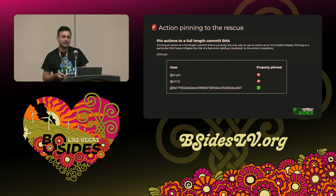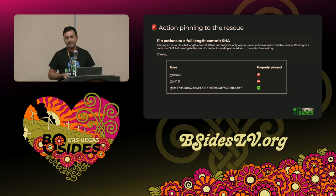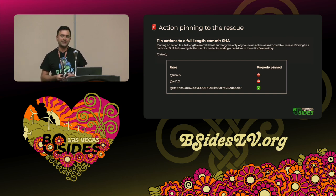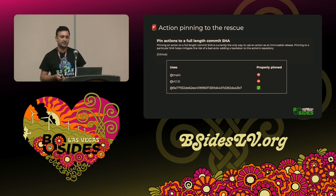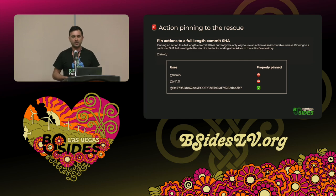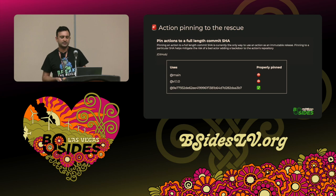To mitigate the risks, we have a concept called action pinning, which is recommended by GitHub. What GitHub means by that is that we pin against a certain commit hash of the action, ensuring that we will always work with a safe version of the action. The way to do so is not by pinning to a branch or to a mutable tag — the only proper way is to use the full commit hash.